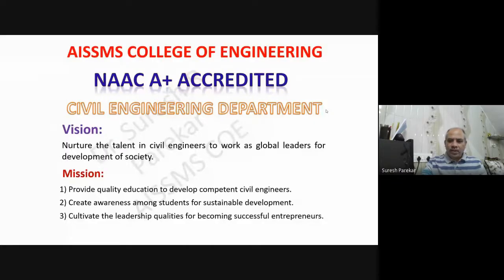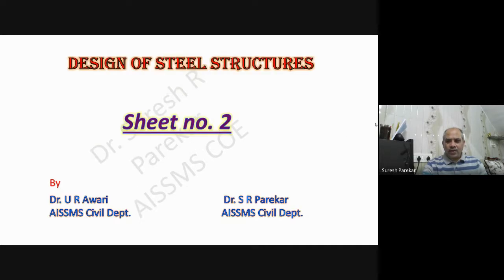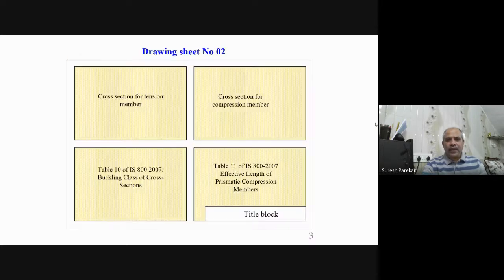Good evening. Today we are going to see sheet number two for the term work of design of steel structures. Sheet number one we have already completed, so now we will switch to sheet number two. Sheet number two is again divided into four parts — same as sheet number one. In the first one-fourth part we have the cross section for tension members.